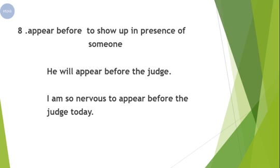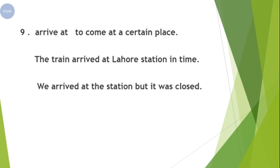Our next phrasal verb is 'arrive at.' It means to come to a certain place — pahunchna. With 'arrive' we use 'at' — we do not use 'with' or 'from.' Example one: 'The train arrived at Lahore station in time.' Example two: 'We arrived at the station but it was closed' — or 'We arrived at the museum but it was closed.'